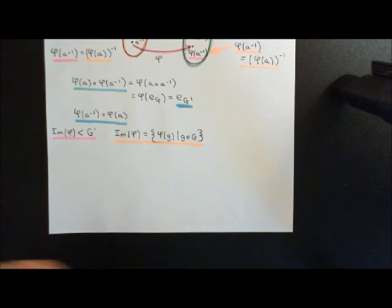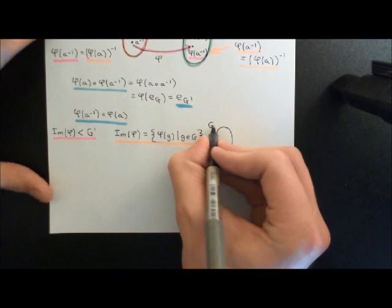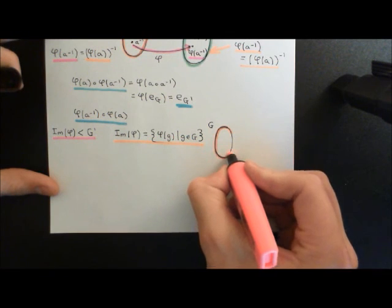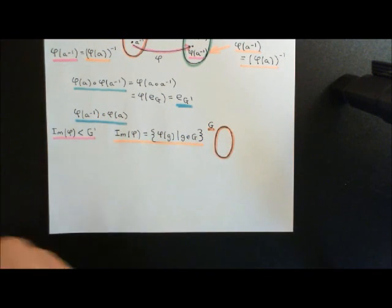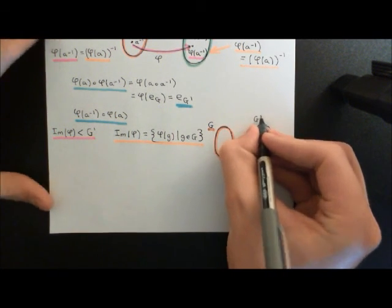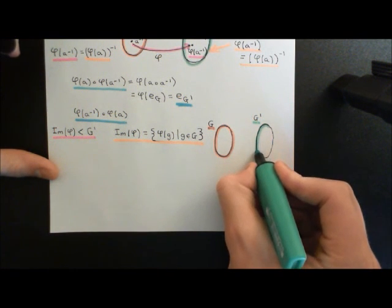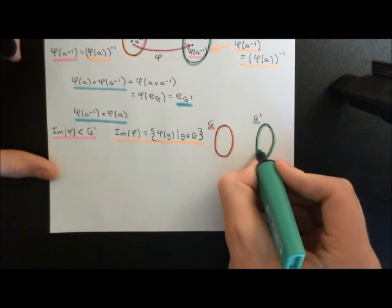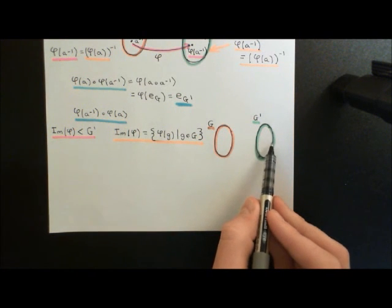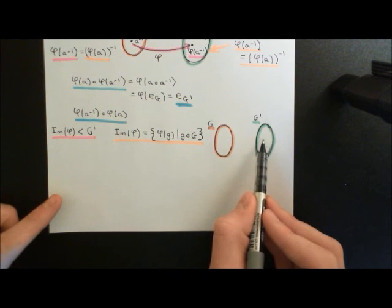Let's draw a picture for this. So we've got our domain group here — capital G, our domain group — and I'll colour that in red. Then we'll have our codomain group as well, capital G prime, and we'll colour that in green. And then we've got our homomorphism, which is our mapping between these two. The image of the homomorphism is the subset of the codomain group that actually has elements in the domain group being mapped onto it.